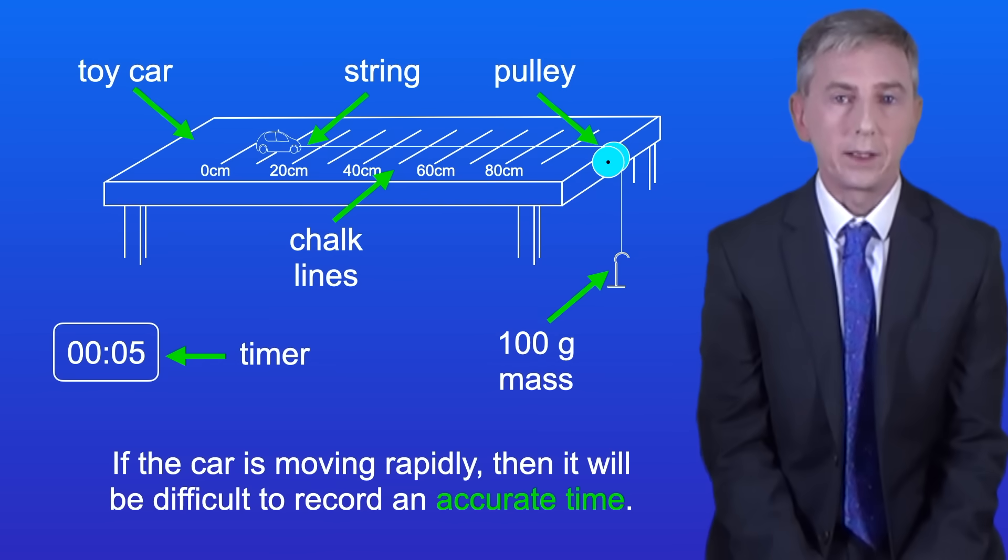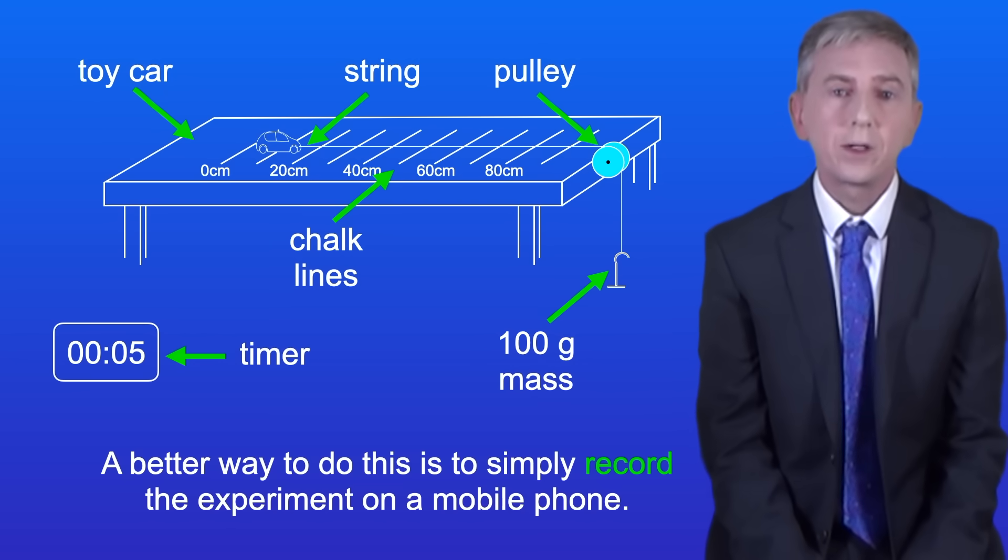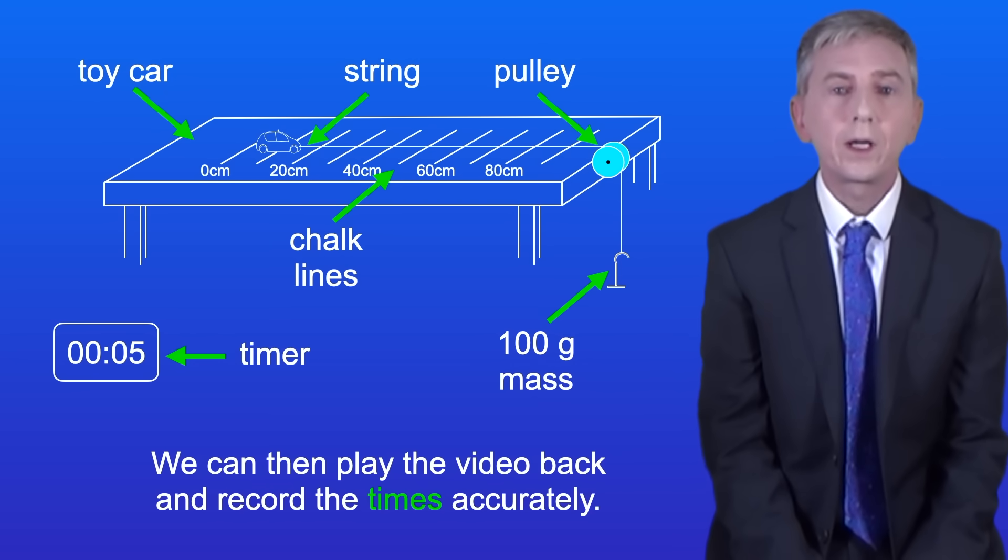If the car is moving rapidly then it will be difficult to record an accurate time. A better way to do this is to simply record the experiment on a mobile phone. We can then play the video back and record the times accurately.